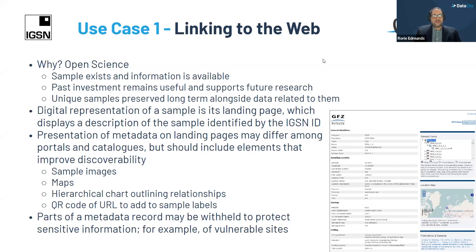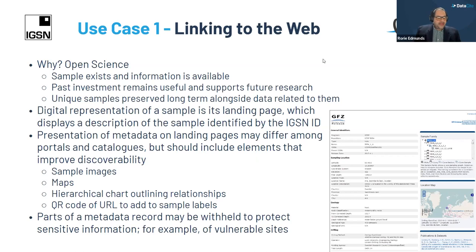The first use case is really linking to the web. This is part of open science — you want to know the sample exists, information is available, your past investment remains useful, and that unique samples are preserved long term alongside related data. The landing page is a digital representation of the sample, containing a description identified by the IGSN ID — connecting the physical with the digital. The presentation on landing pages may differ amongst different portals and catalogs, but you really want to improve discoverability. There might also be reasons why you don't want to share some information, such as commercial interest or a vulnerable site, so those could be excluded.